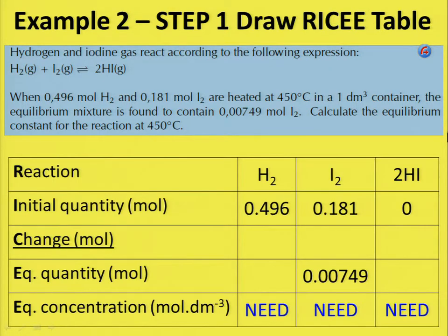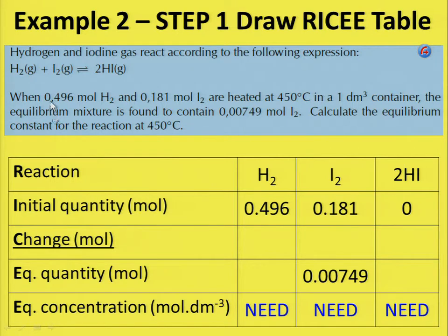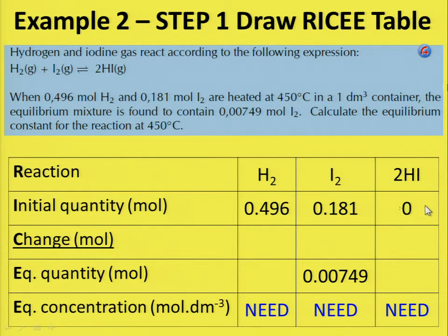Let's draw the table. The first thing to do is R — your reaction: H₂ plus I₂ gives you 2 moles of HI. Your initial quantities are given in the question: 0.496 moles of hydrogen, 0.181 moles of iodine. And at the beginning of the reaction there are no products yet, so the initial quantity of HI is zero.